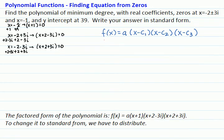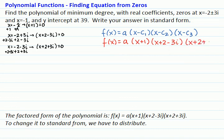So the factored form of our polynomial will be f of x equals a times x plus 1 for our first factor, times x plus 2 minus 3i for our second factor, times x plus 2 plus 3i for our third factor.